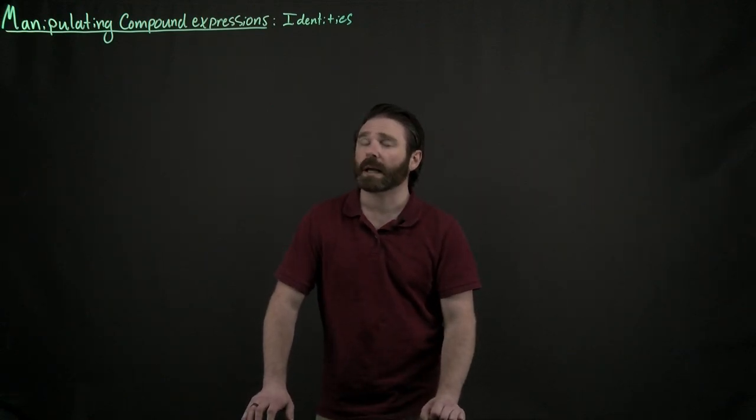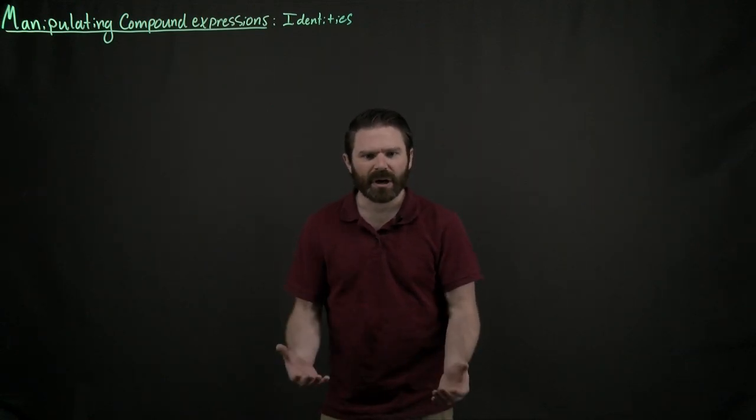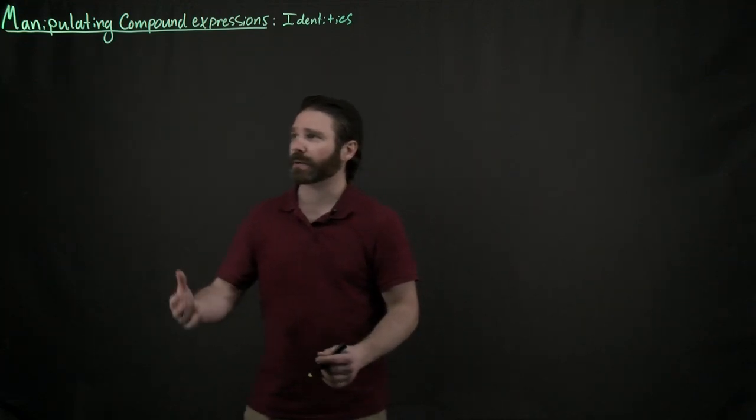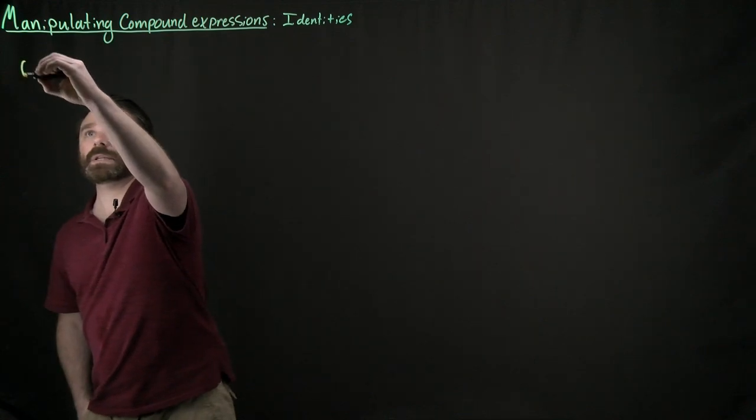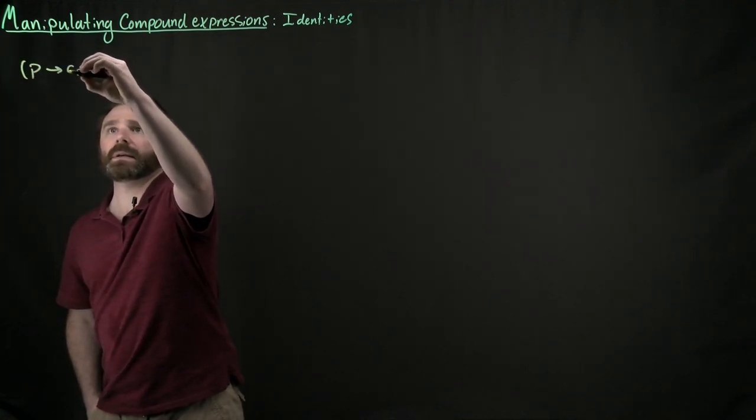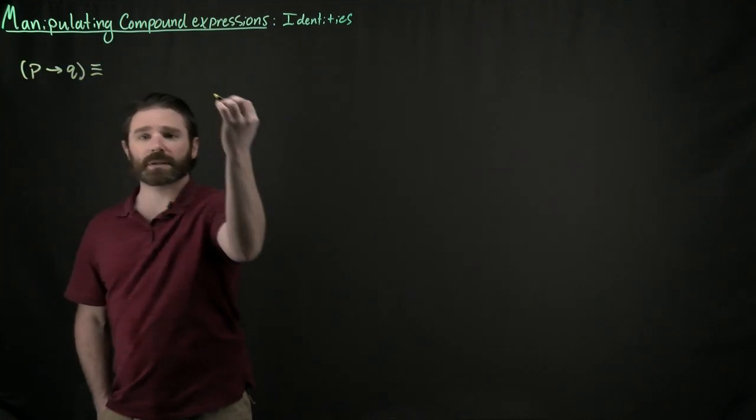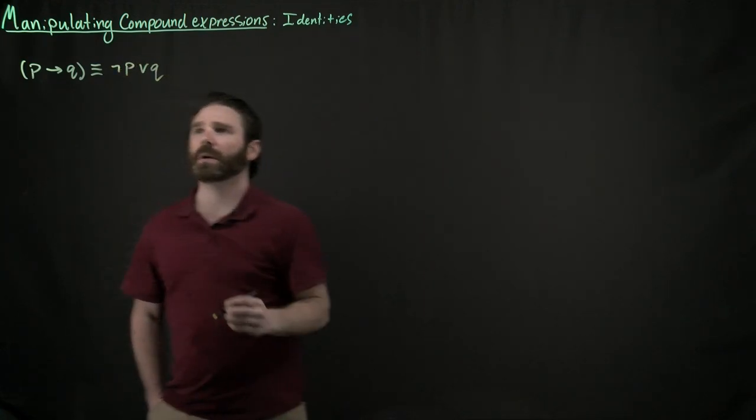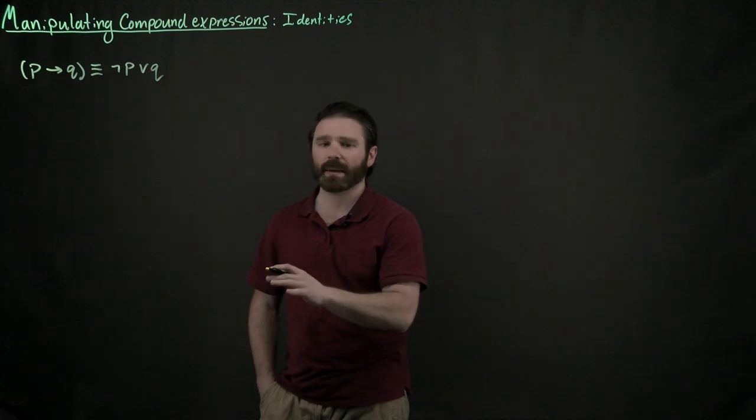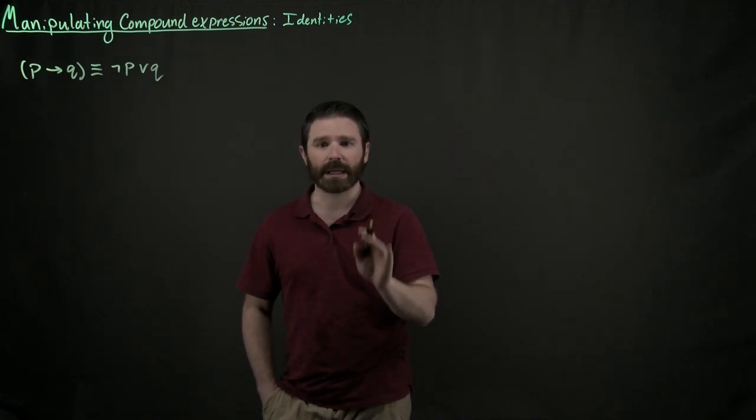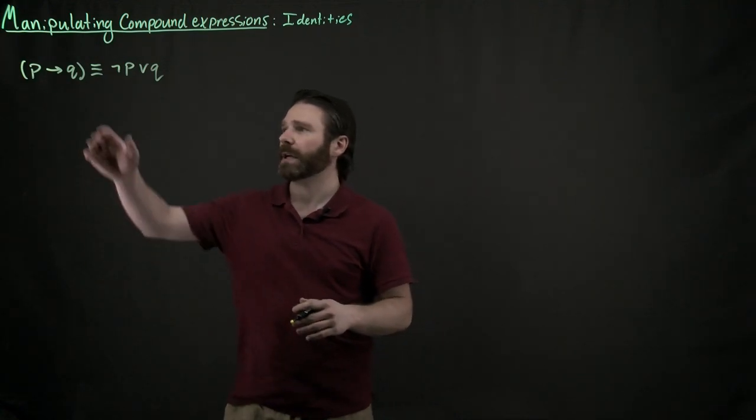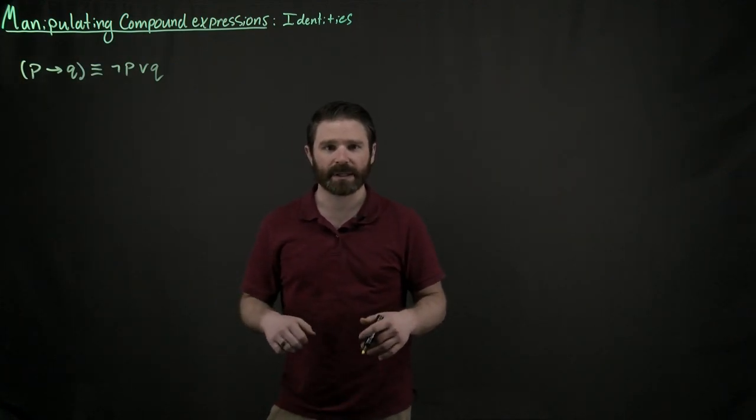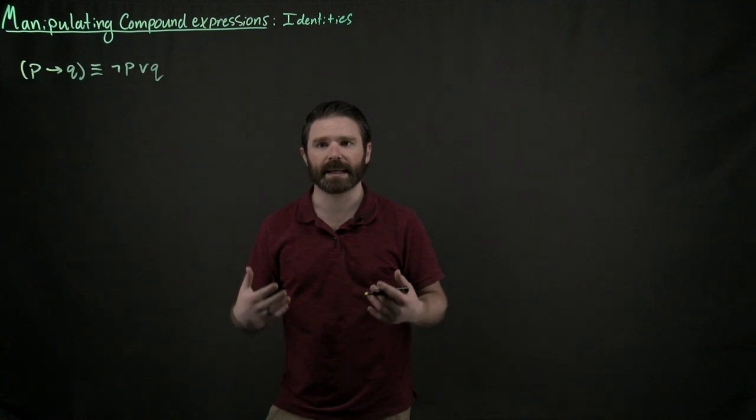So let's dive right in with identities. We've actually already seen a few different identities. For example, when I was talking about implication, we saw that P implies Q is logically equivalent to not P or Q, right here. And this is our first example of an identity. So an identity is nothing but two logically equivalent compound expressions. It's basically two different ways to say the same thing.